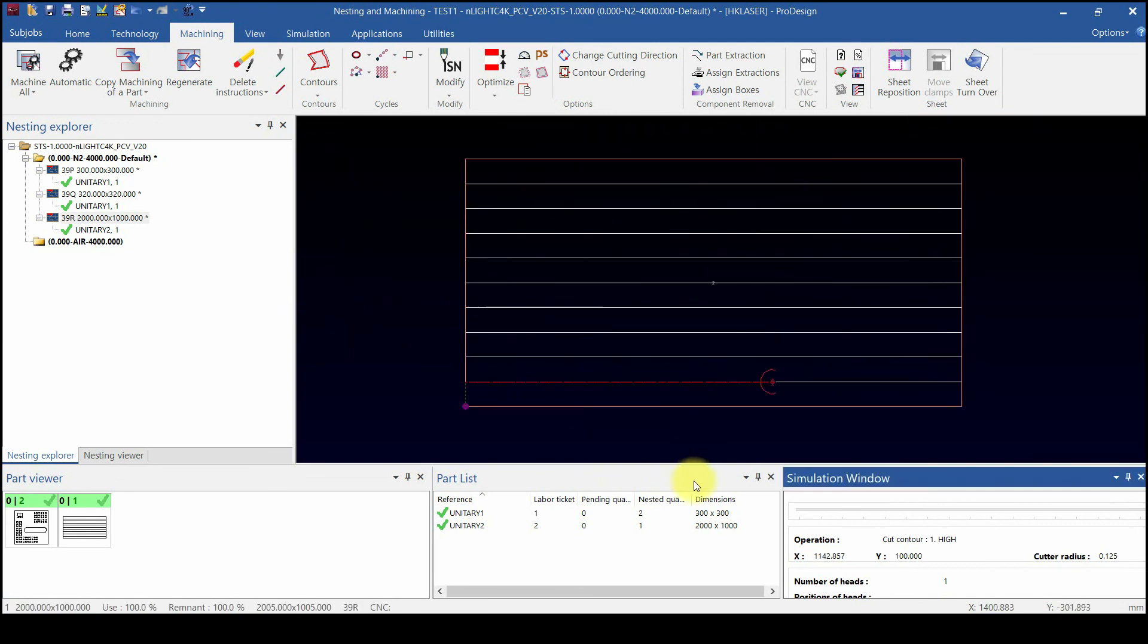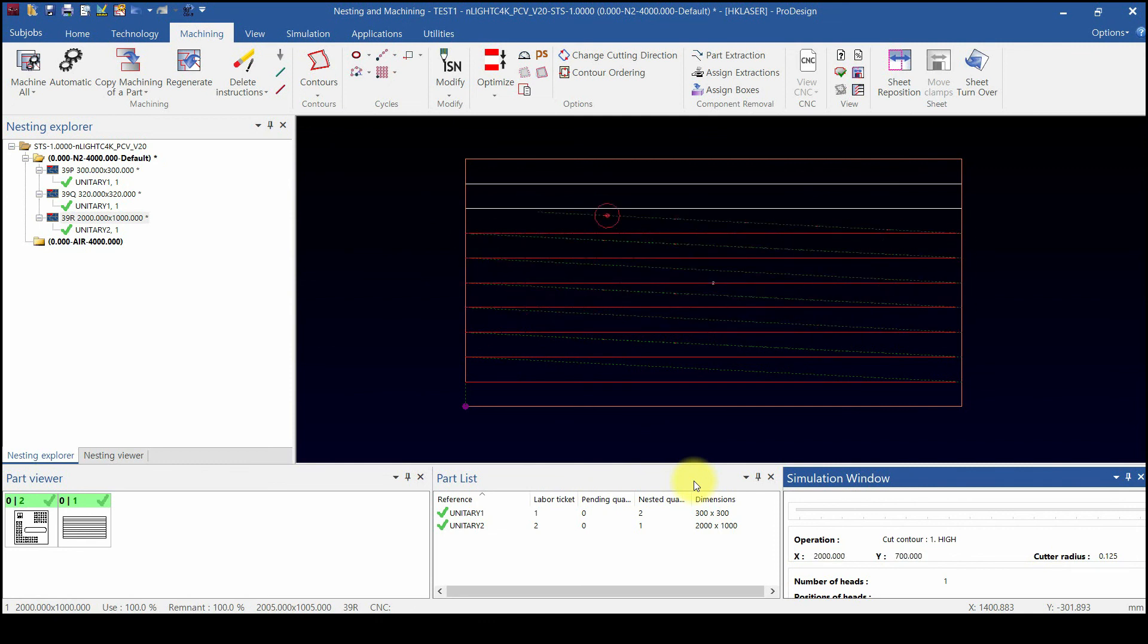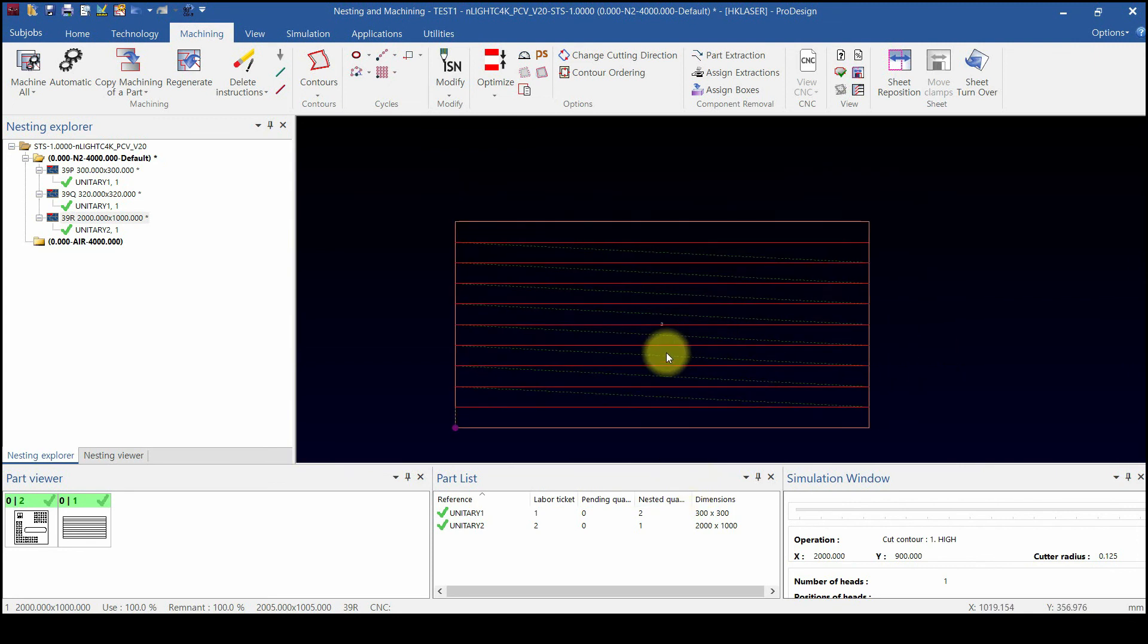Until now, I've explained unitary nesting, which is used for jig or sample work and other cutting techniques. Next time, let's learn about machining techniques. Thank you.